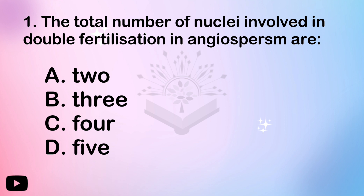This question is a very different one. How many nuclei are involved in fertilization? There are two polar nuclei in the center — that's one.